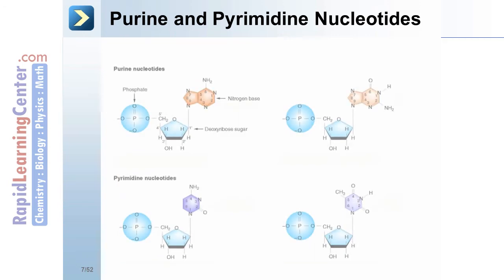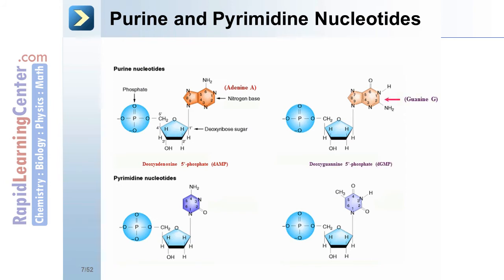Purine and pyrimidine nucleotides. Purine nucleotides and pyrimidine nucleotides. Notice they're the nitrogenous bases. Adenine. Guanine. These are the two purine nucleotides. Cytosine. And thymine. These are the two pyrimidine nucleotides.